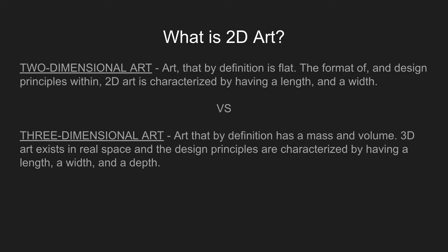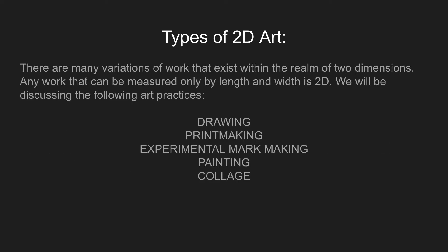So, what is two-dimensional art? Art that by definition is flat. The format and design principles within 2D art are characterized by having a length and a width. Versus three-dimensional art, which by definition has mass and volume — 3D art exists in real space and is characterized by having a length, a width, and a depth. Any work that can be measured only by length and width is 2D.